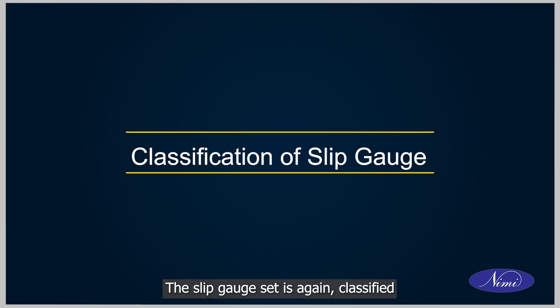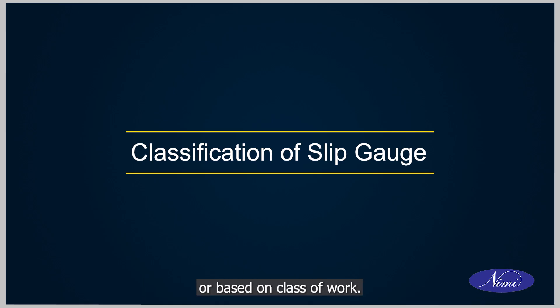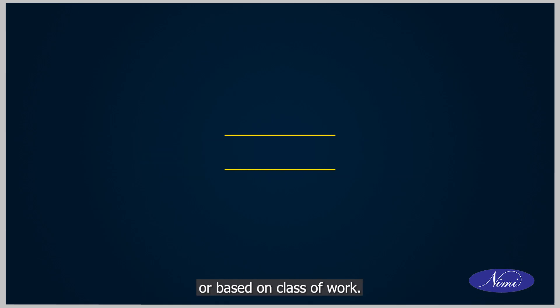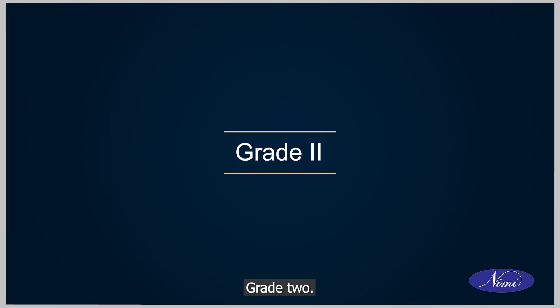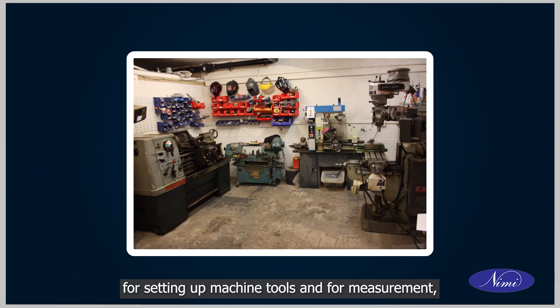The slip gauge set is classified into various grades based on their accuracy or class of work. Grade 2: This is used in the workshop for rough checks, for ordinary inspection work, for setting up machine tools, and for measurement where production tolerances are relatively wide.